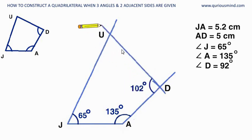Where these two lines intersect, that is our point U. Thus we have drawn the quadrilateral JADU where we knew two adjacent sides and three angles.